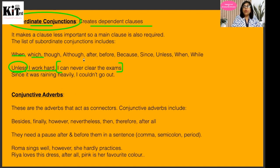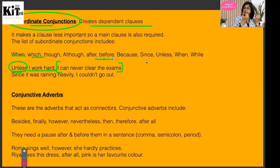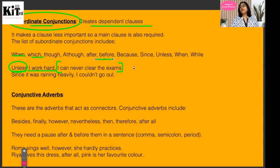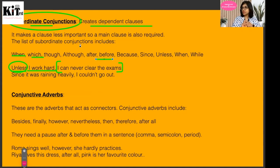Subordinating conjunctions include words like: when, which, though, although, after, before. 'After I came back from school, I was really hungry' — 'after' makes the clause dependent. 'I had gone to the temple before I went to school.' In complex sentences, you will see subordinating conjunctions because they create subordinate clauses. A complex sentence has a minimum of one subordinate clause and one main clause.